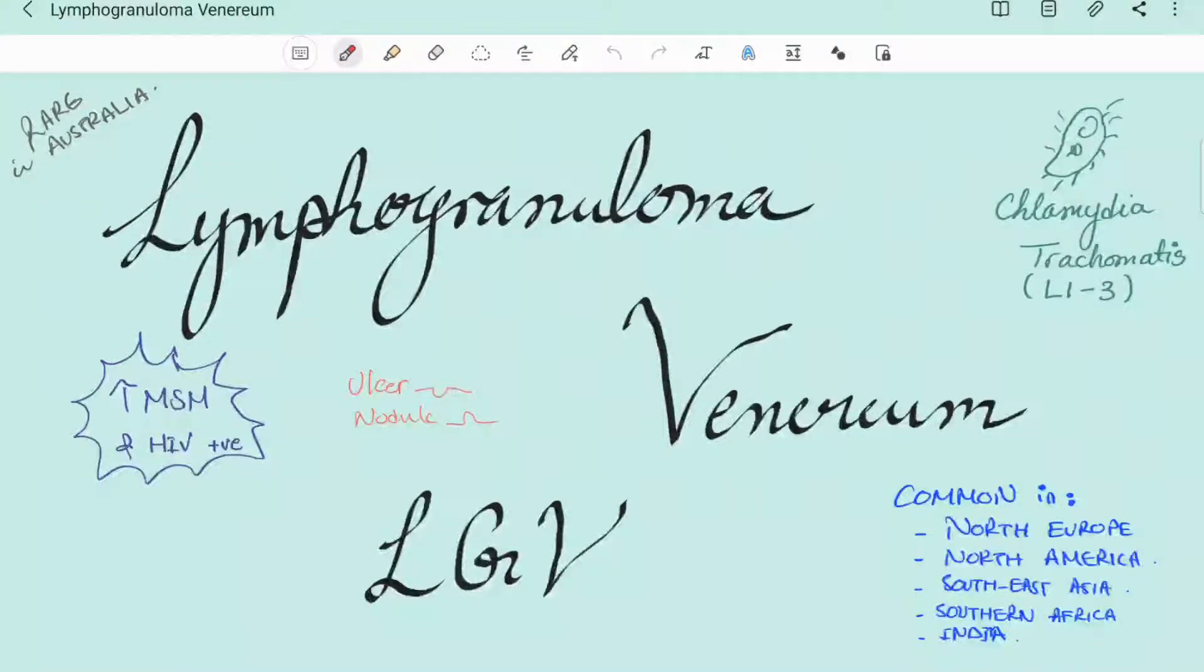Lymphogranuloma venereum, or LGV, is a sexually transmissible infection, an STI, caused by rare and aggressive strains of the bacteria that causes chlamydia, which is chlamydia trachomatis.